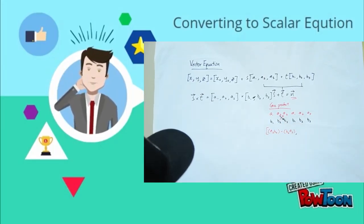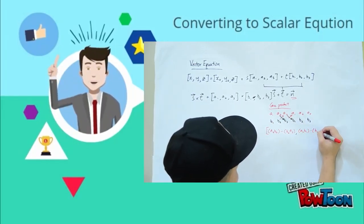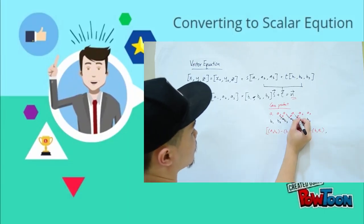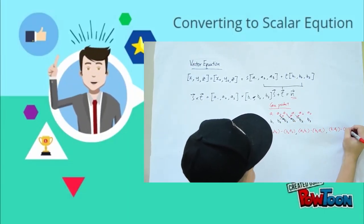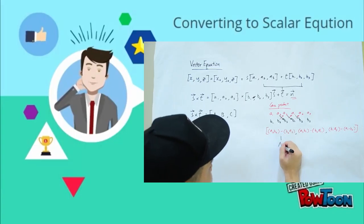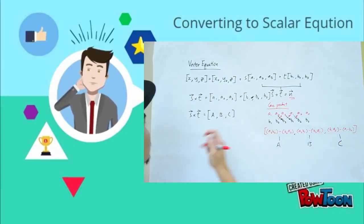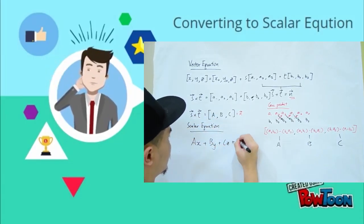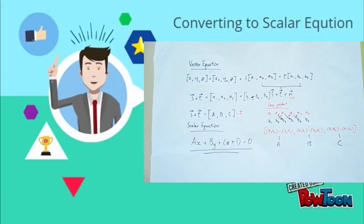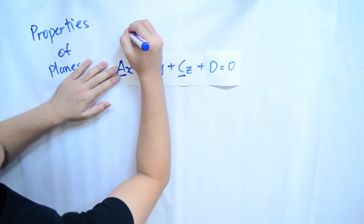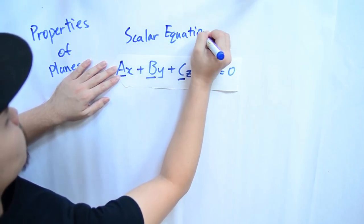As shown here, s and t are the non-parallel direction vectors parallel to the plane. They can be used to form the normal vector using the cross-multiplication method. Different colors are used to show a better visual of the multiplication. Once we have the normal vector equal to bracket A, B, C, we can form the scalar equation by substituting the points into AX plus BY plus CZ plus D equals 0.